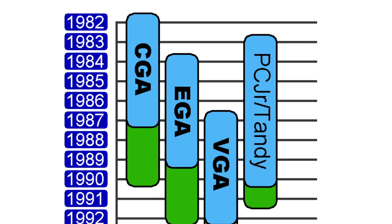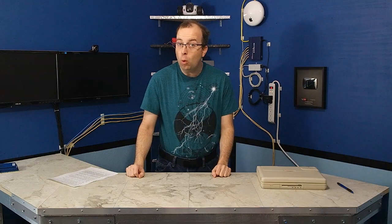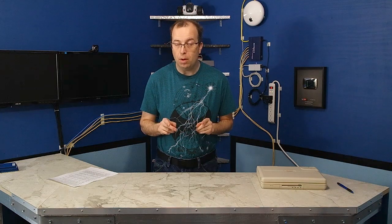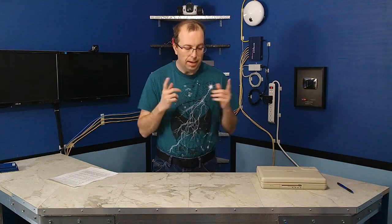CGA probably doesn't look like it's very good for playing video games. But if you're thinking that, it's probably because you've only ever seen it connected to an RGBI monitor. Remember how I said EGA and VGA were backwards compatible with CGA? Well, that isn't entirely true — they're only backwards compatible with the RGBI mode of CGA.